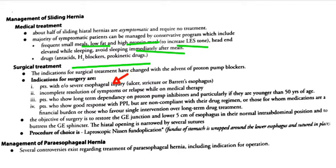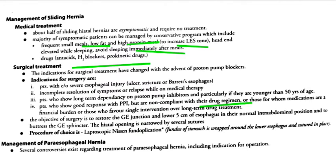Indications for surgical treatment include: esophageal injury such as ulcers, strictures, and Barrett's esophagus; failure of medical therapy with relapse of the sliding hernia; patients requiring long-term proton pump inhibitors especially if younger than 50 years; non-compliance with PPIs; or when medications are a financial burden and the patient prefers a single intervention over long-term drug treatment.